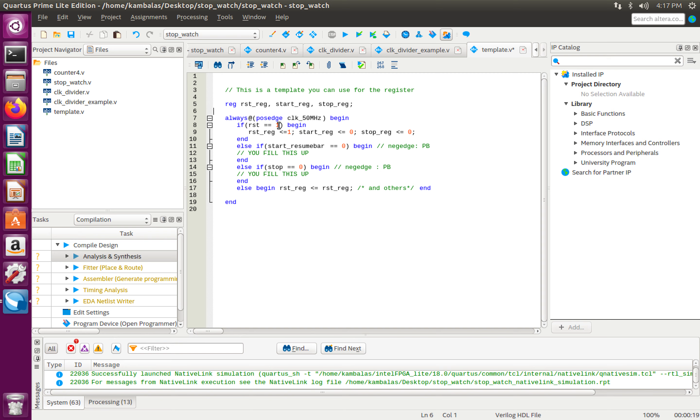Next, what you do? If my reset is 1, so this reset that is mentioned here is nothing but your slide switch. If my reset is 1, then my reset register is set to 1 and my other registers, which is my start register and stop register are set to 0.